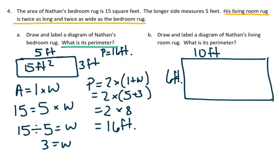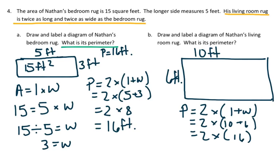For B, it's asking us to find out what the perimeter is. Perimeter is 2 times length plus width, 10 plus 6, 2 times 16. So our perimeter is equal to 32 feet.